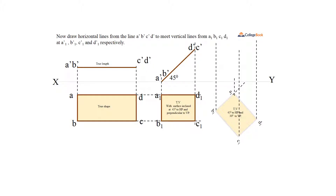Now draw horizontal lines from the points A', B', C', and D' to meet the vertical lines from A1, B1, C1, and D1 at A1', B1', C1', and D1' respectively.